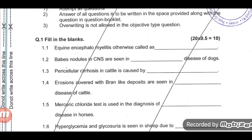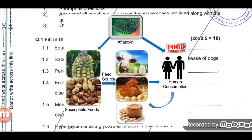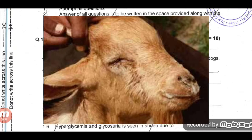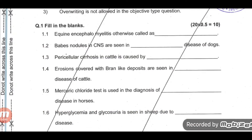Question 2: Pericellular cirrhosis in cattle is caused by aflatoxins. Question 3: Erosions covered with brown-like deposits are seen in Peste des Petits Ruminants (PPR) disease. Question 4: Mercury-chloride test is used in the diagnosis of trypanosomiasis disease in horses.